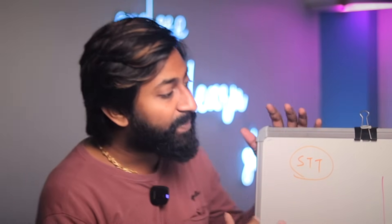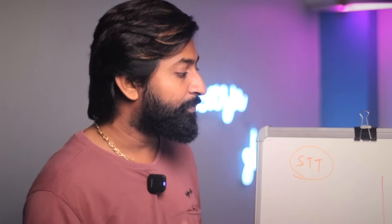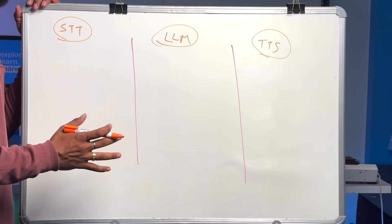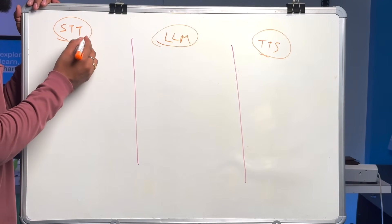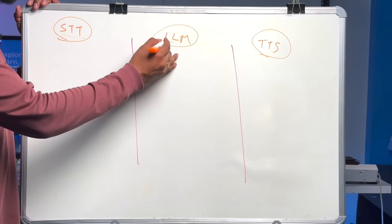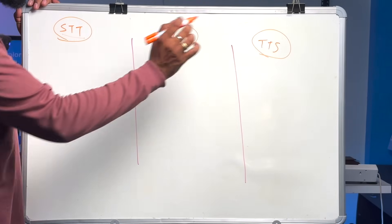Rather than explaining the code line by line, let me explain the workflow — what the important parts of the code are, how it's working, and which step requires which API key. This complete project is divided into three segments: STT which is speech-to-text, LLM which is large language model, and TTS which is text-to-speech.